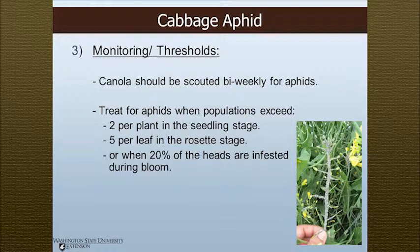Monitoring thresholds for cabbage aphid: canola should be scouted bi-weekly for aphids. Treat when populations exceed two per plant in the seedling stage, five per leaf at the rosette stage, or when 20 percent of the head is infested during bloom. In this picture here, you can see that this plant is way past 20 percent — this grower probably should have treated for aphids some time ago.